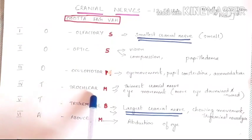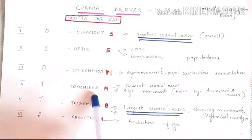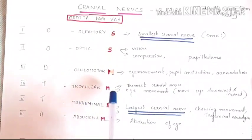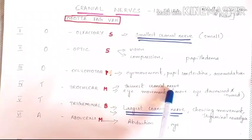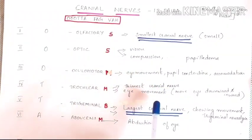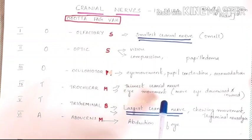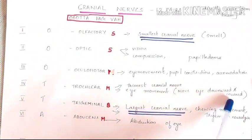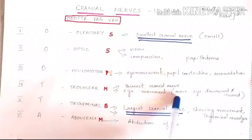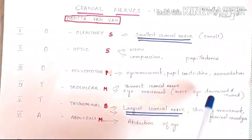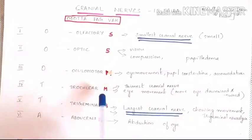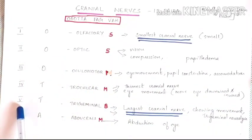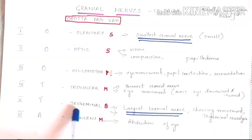The fourth cranial nerve is the trochlear nerve. It is a motor nerve and is the thinnest cranial nerve. It helps to move the eye downward and inward.